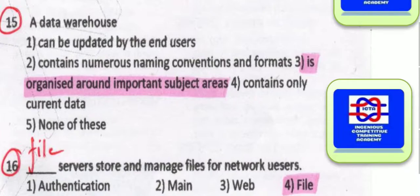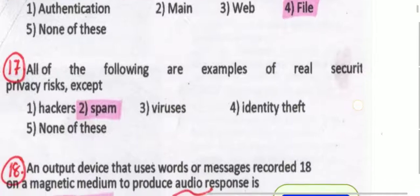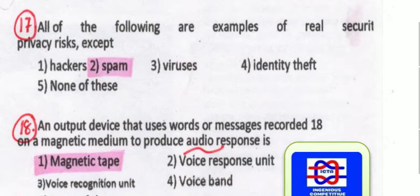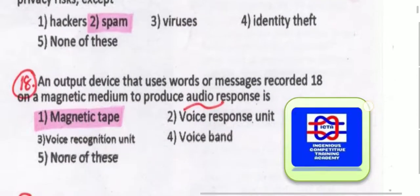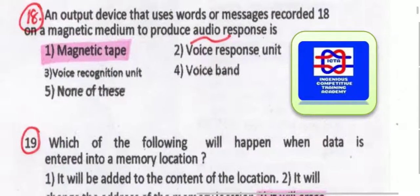File servers store and manage files for network users. The examples of real security and privacy risks — except spam. Please remember: the real security and privacy risks exclude spam. An output device that uses words or messages recorded on a magnetic medium to produce audio response is a magnetic tape.